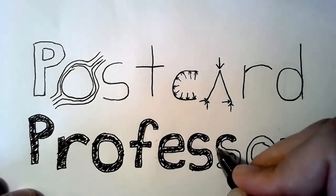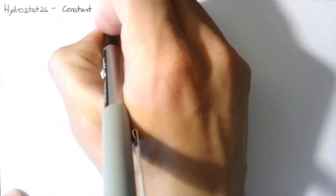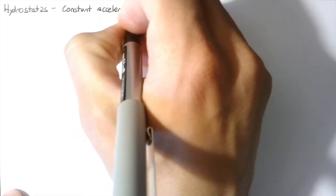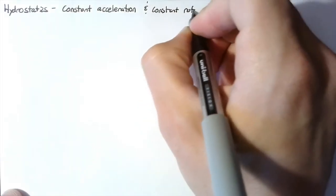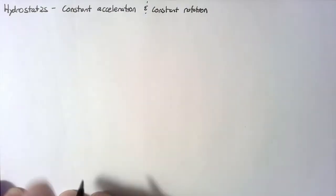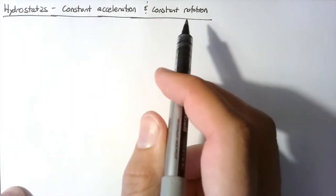Hello and welcome to the Postcard Professor, where we take complex ideas and explain them in the space of a postcard. In this video, we're going to be looking at hydrostatics with constant acceleration and constant rotation. It may seem a little odd to be talking about hydrostatics when we have acceleration and rotation, but we can actually use the same methodologies from hydrostatics to look at these two specific cases. Specifically, what we're looking at is pressure variation in these two scenarios.